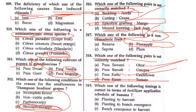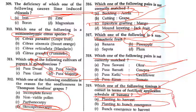Which one of the following timings is correct in terms of fertilizer application schedule in banana? The correct timing is from planting to bunch emergence. Bunch emergence in banana — when bunch emergence happens, only then apply fertilizer.